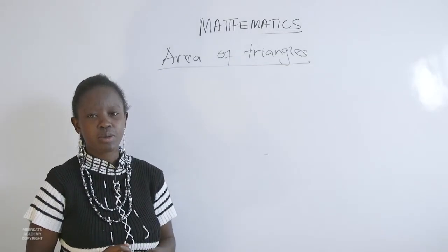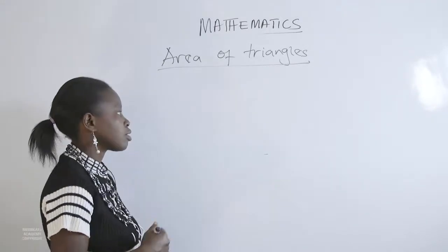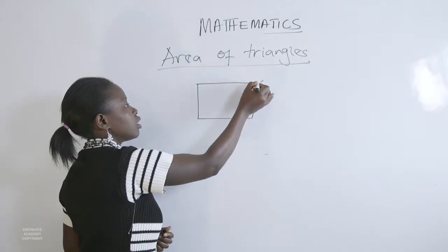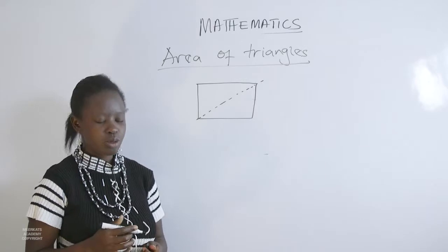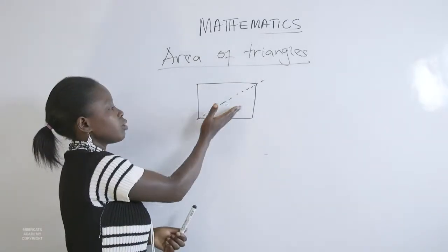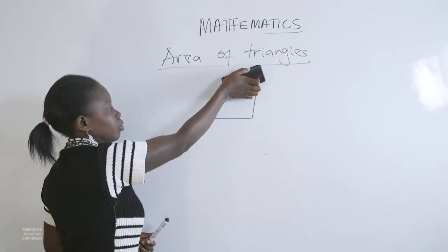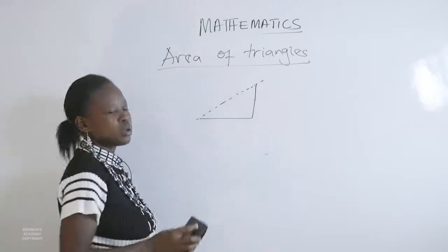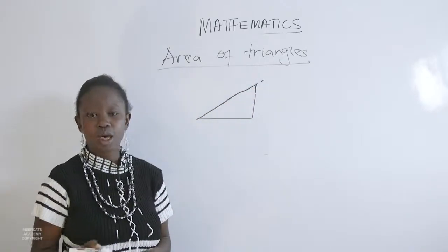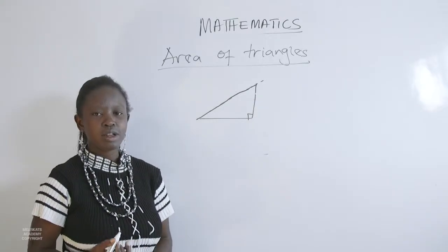After looking at rectangles, we move on to find the area of triangles. A triangle can be obtained by dividing a rectangle into two halves using the diagonal. This gives us two shapes — the upper and lower. Each half of the rectangle formed through the diagonal is what we refer to as a triangle.